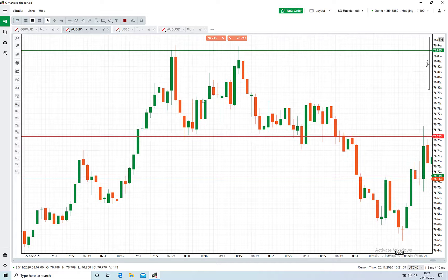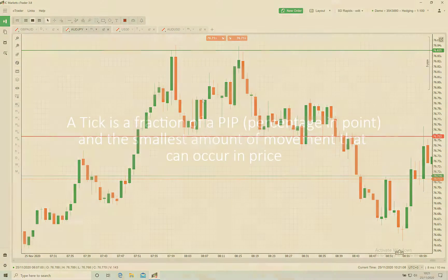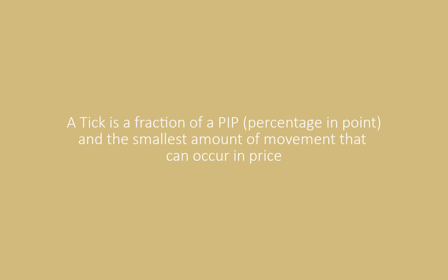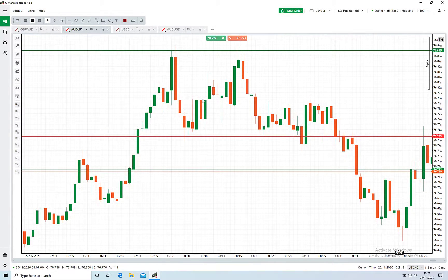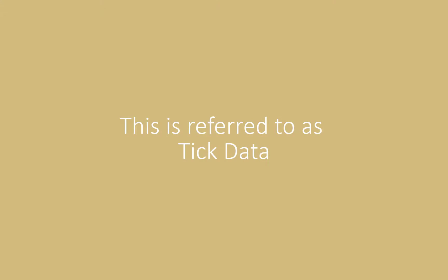To start with, let me explain what a tick is. A tick is a fraction of a pip and the smallest possible movement that can occur in price. The size of a tick will vary between instruments. Each time the price moves by this amount the data is sent through, and this includes the volume that created this price movement.